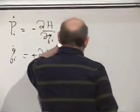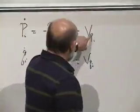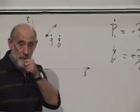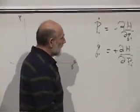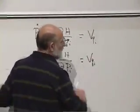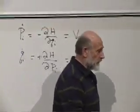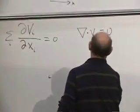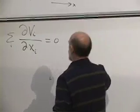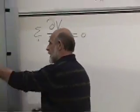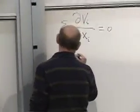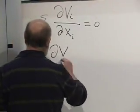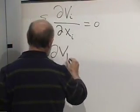The divergence of the flow is: we take v-p-sub-i and differentiate it with respect to p-sub-i. Let's write the divergence of the flow. First, we have the derivative of p-dot with respect to p — that's the derivative with respect to p of v_p. But v_p is minus dH/dq.